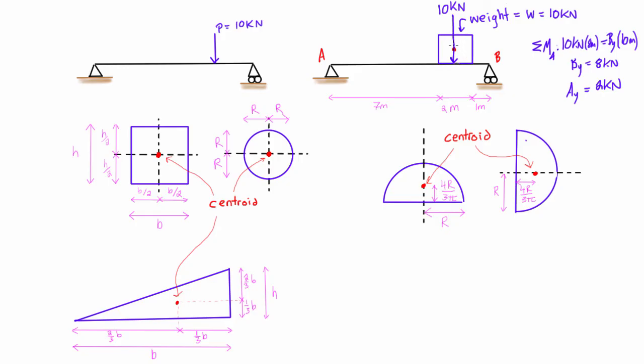then the line of action of this force would have moved and that would mean that our reaction here at B would be a little bit bigger than 8 and our reaction at A would have ended up being a little bit smaller than 2.